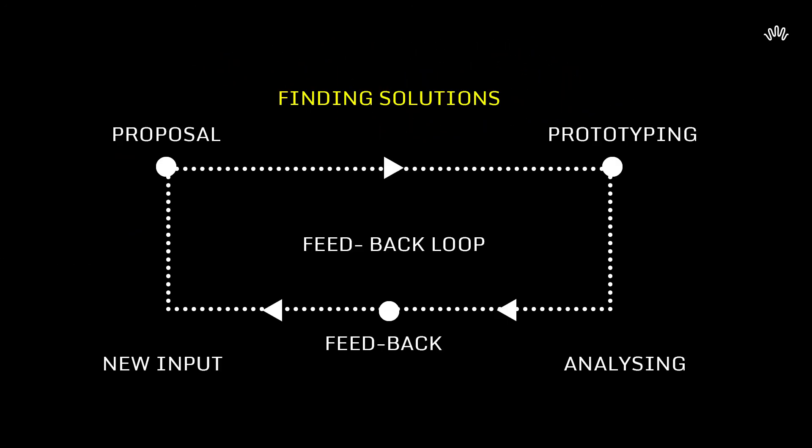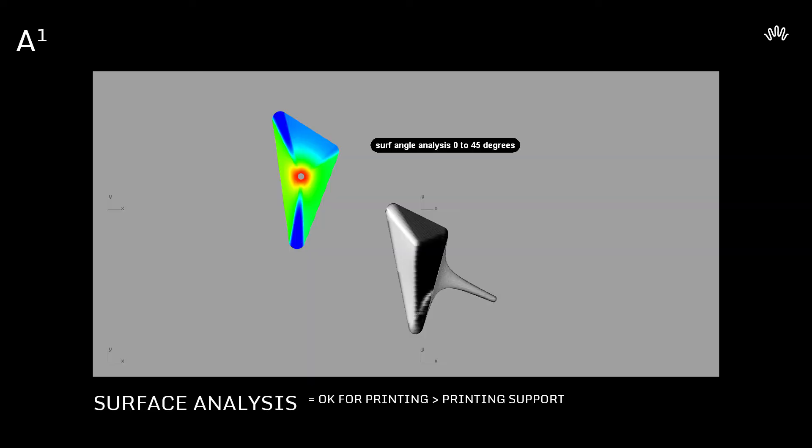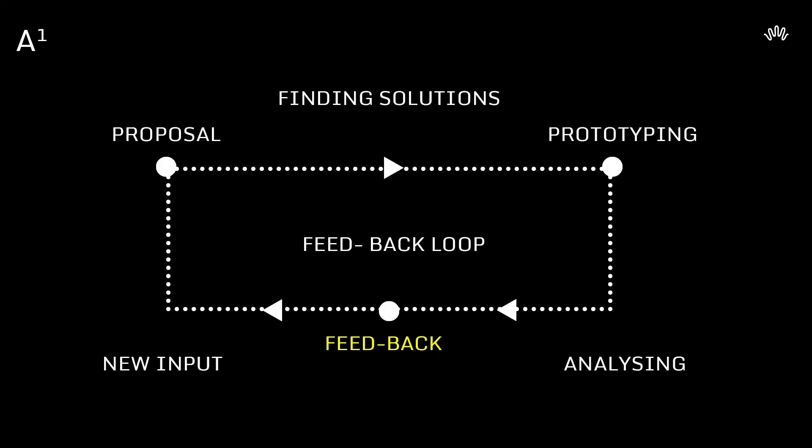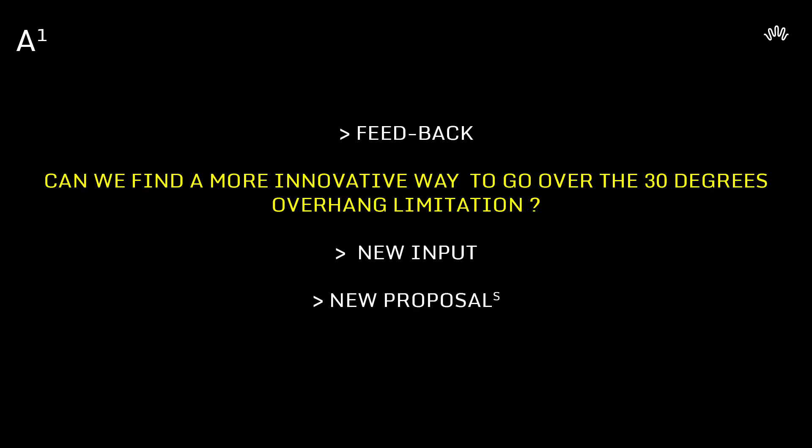Before we can go to prototyping, we need to find solutions to have this object printed. Knowing that the three-axis machine is limited to an overhang of 30 degrees, which is the blue area, needs to have a support. This is the first prototype. The feedback from this first prototype is: can we find a more innovative way to go over the 30-degree overhang limitation?